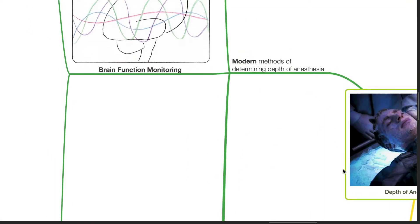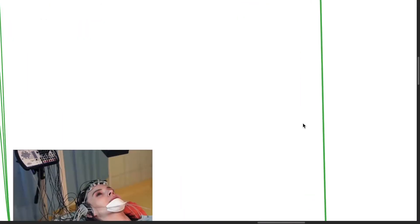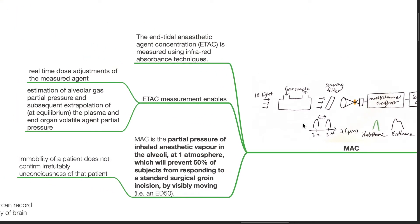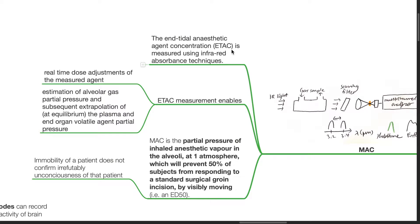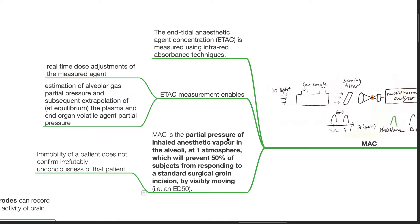We move on to the modern methods of determining depth of anesthesia. The end-tidal anesthetic agent concentration (ETAC) is measured using infrared absorbance techniques. ETAC measurement enables real-time dose adjustments of the measured agent, estimation of alveolar gas partial pressure, and subsequent extrapolation at equilibrium of the plasma and end-organ volatile agent partial pressure. MAC is the partial pressure of inhaled anesthetic vapor in the alveoli at 1 atmosphere, which will prevent 50% of subjects from responding to a standard surgical groin incision by visibly moving. However, immobility of a patient does not confirm irrefutably unconsciousness of that patient.